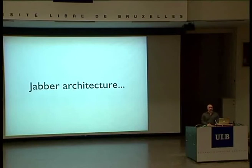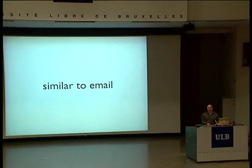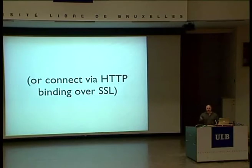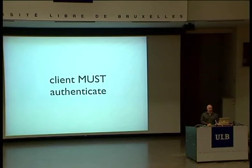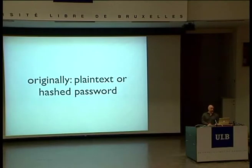So what have we done to help? Let's look at the Jabber architecture. It's a client-server architecture similar to email. A client connects on a TCP connection on port 5222. Or we have HTTP over SSL and these kinds of things, but the typical is a TCP connection over port 5222. The client must authenticate. Original technologies used plain text password — obviously not a very good idea — and then a hash password, which was the other early technique we had.